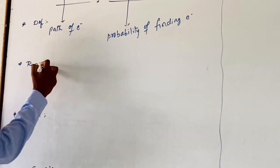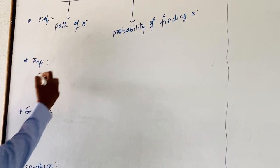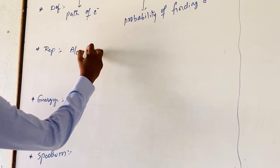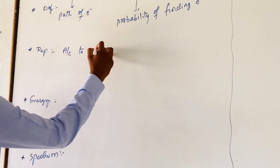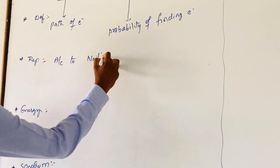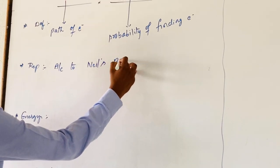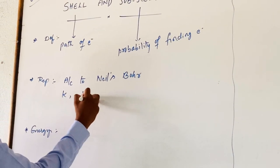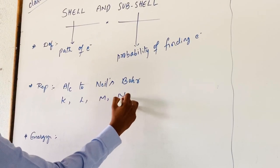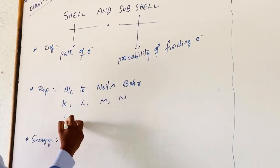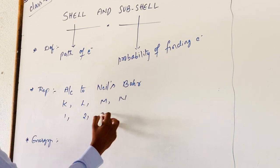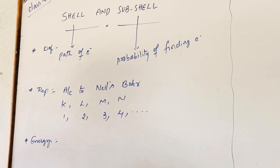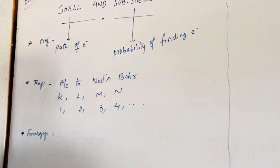Coming to the shell representation: according to Niels Bohr, shells are represented by K, L, M, N, and correspondingly by the numbers 1, 2, 3, 4, and so on.